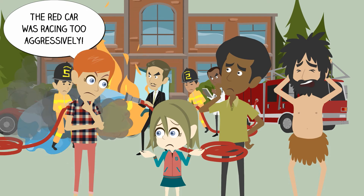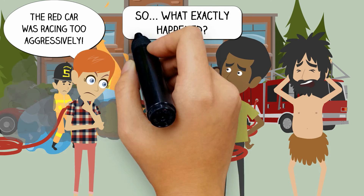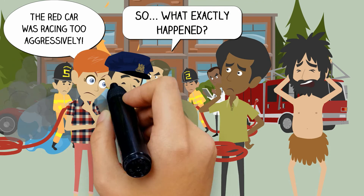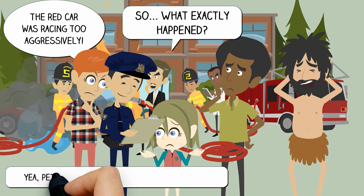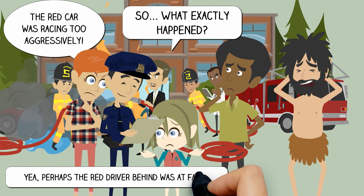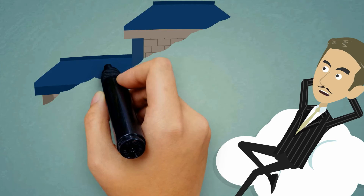The media and other bystanders kept talking about how the car behind was at fault and how it raced so aggressively dangerous. When law enforcement interviewed you, you were exposed to such misinformation that interfered with your thinking, making you feel that perhaps the driver behind was at fault when you consciously knew that he wasn't.